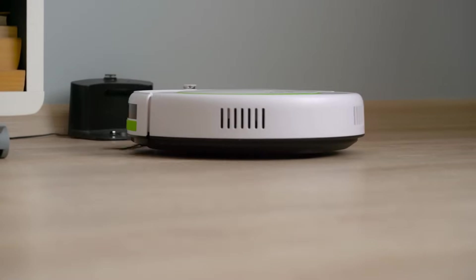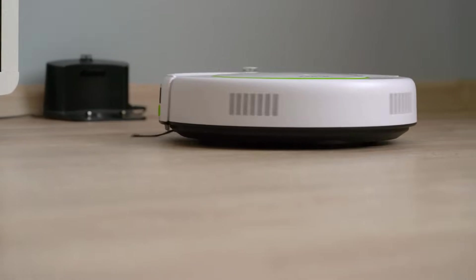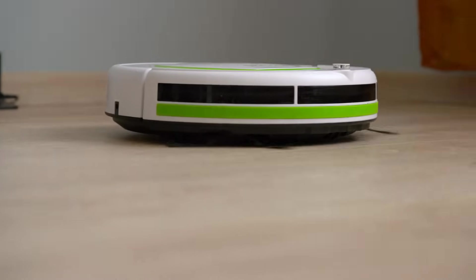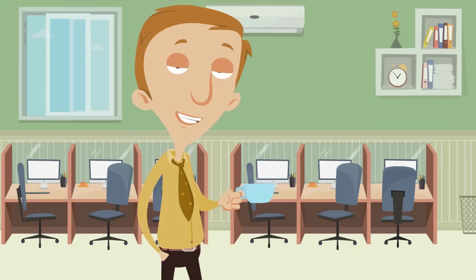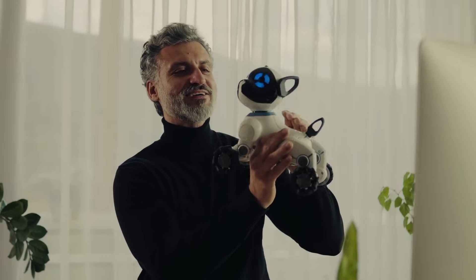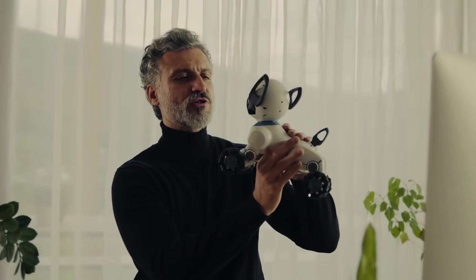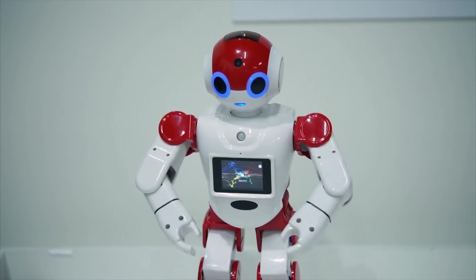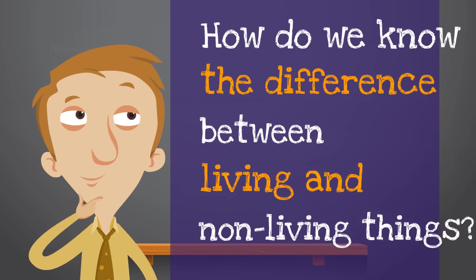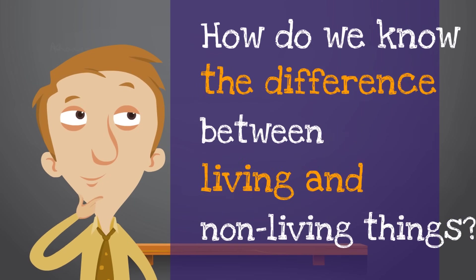This is a robot that cleans floors. Maybe you've seen one of these before, or maybe there's one in your house. Robots are pretty interesting because they move on their own, but they aren't alive — they aren't living. Which has me thinking: what makes something alive? How do we know the difference between living and non-living things?